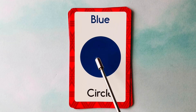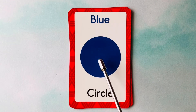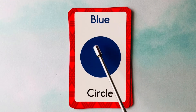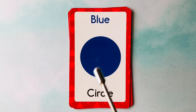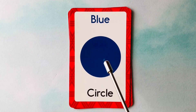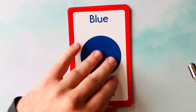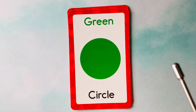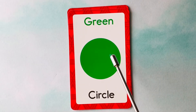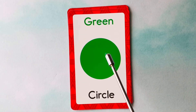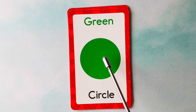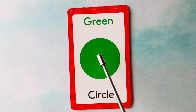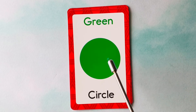This is a circle. What color is this circle? It's a blue circle. This is also a circle. What color is this circle? It's a green circle. This is a green circle.